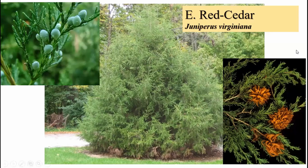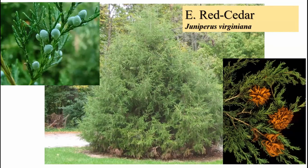Eastern red cedar has prickly, often awl-like foliage, though sometimes softer and scale-like. It has little red berry-like structures that are actually modified cones. Eastern red cedar is common in disturbed areas and is not very shade tolerant. An interesting characteristic is its rust disease — cedar apple rust — which co-hosts on apples and hawthorns.